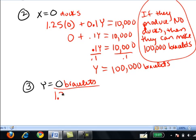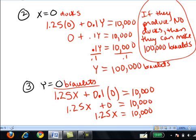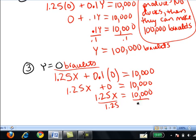So again, I plug y equals 0 into the formula. So I have 1.25x plus 0.1 times 0 equals 10,000. That is, 1.25x plus 0 equals 10,000. 1.25x equals 10,000. Dividing both sides by 1.25, x equals 8,000.